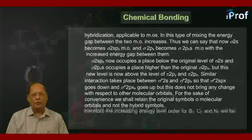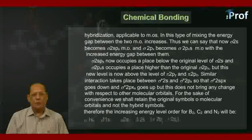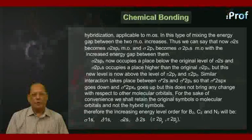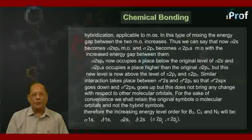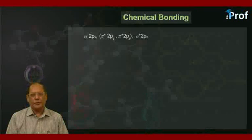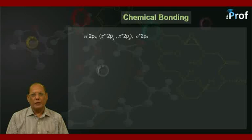Therefore the increasing energy level order for B₂, C₂ and N₂ will be starting from σ1s, next is σ*1s, then σ2s, then σ*2s, now comes a set of two degenerate π orbitals that is π2pᵧ and π2pᵤ, next is σ2pₓ, thereafter comes a set of degenerate orbitals π*2pᵧ and π*2pᵤ, and finally σ*2pₓ.